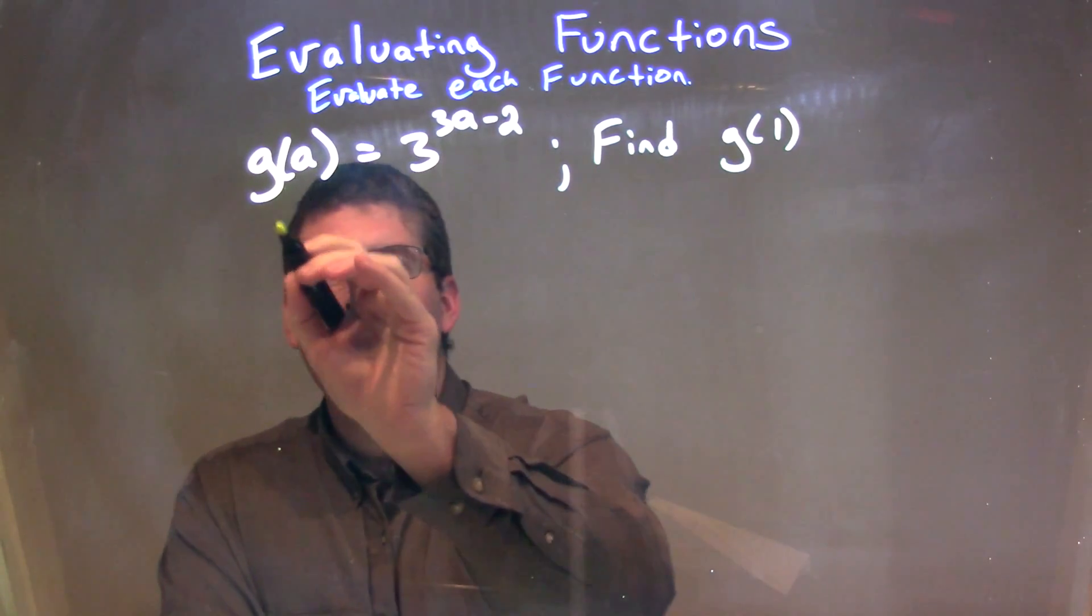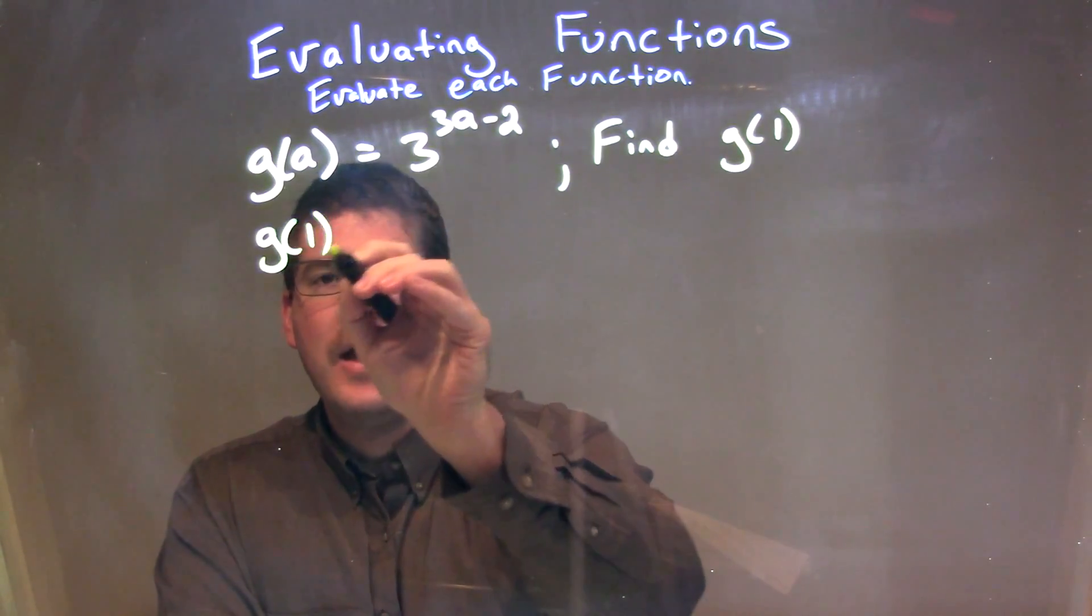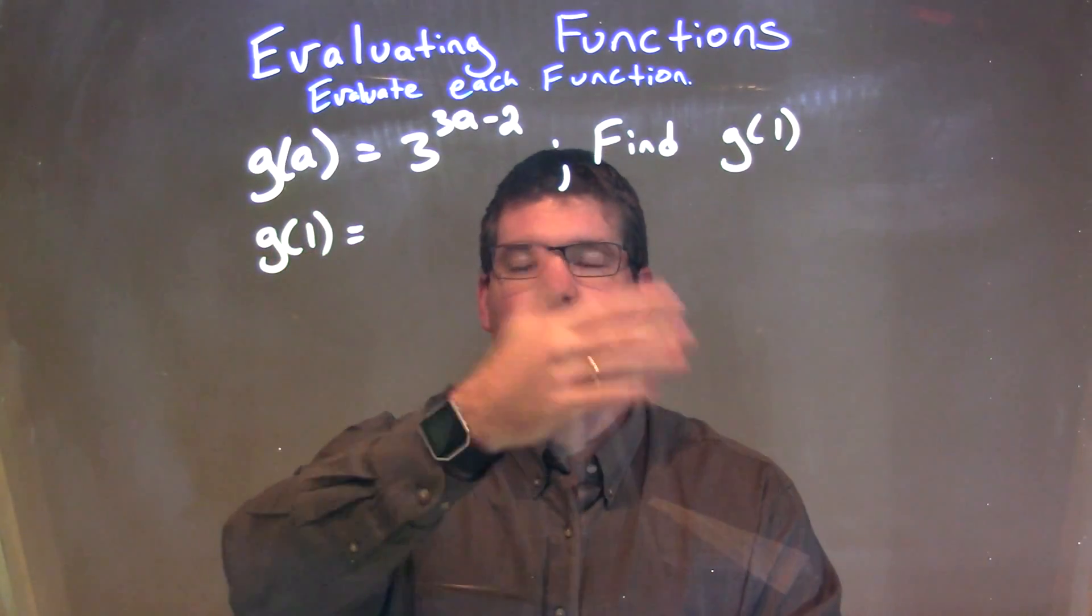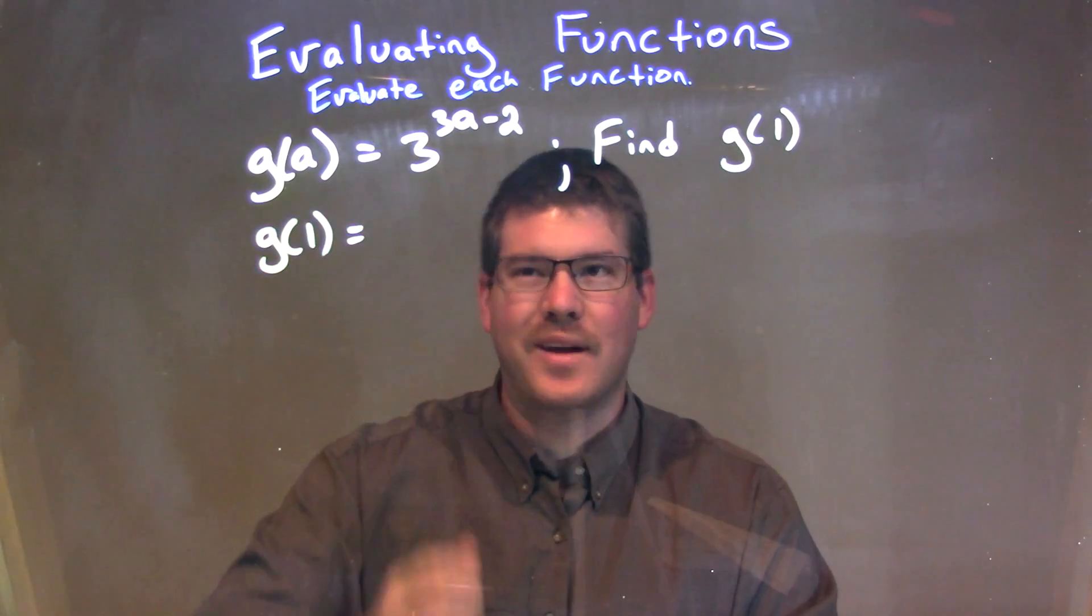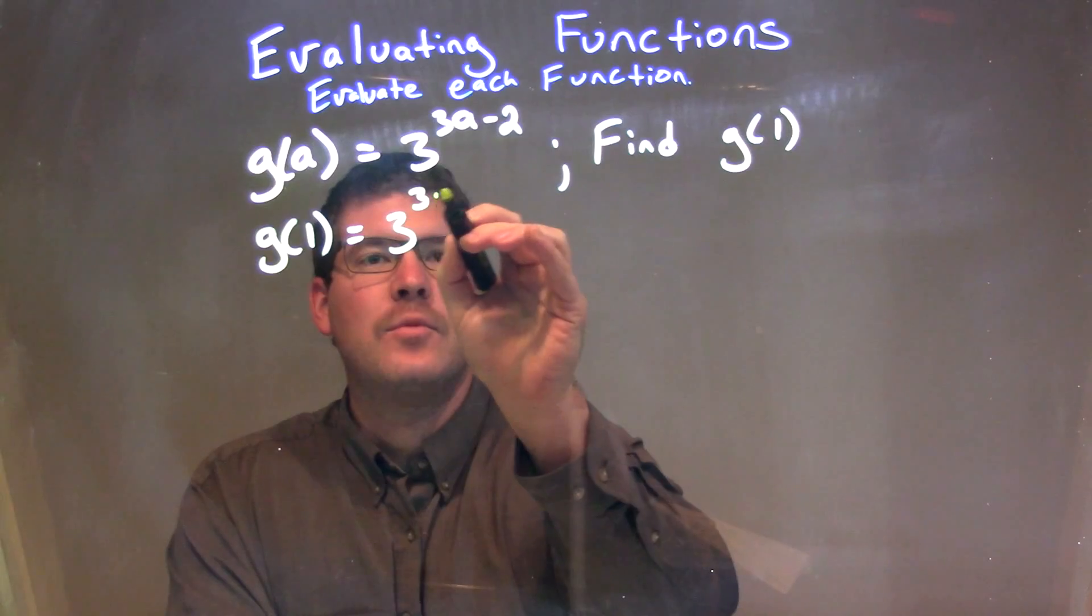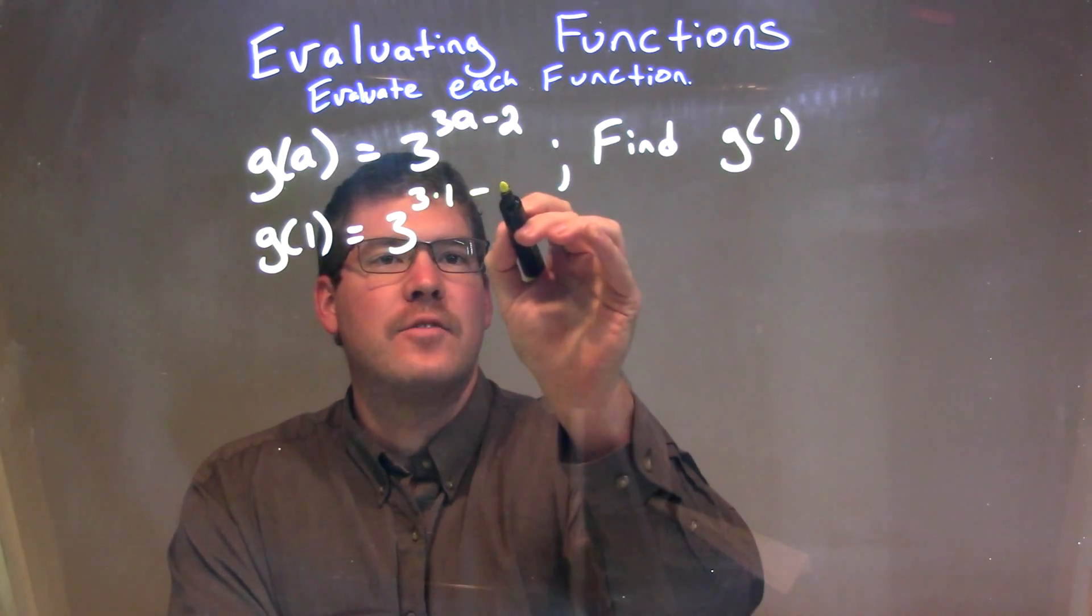I'm going to rewrite this function, but instead of a, I'm going to put a 1. So every single time I had an a, I'm substituting with a 1 to find when 1 is plugged in for a. So g of 1 is equal to 3 to the 3rd power times 1 minus 2.